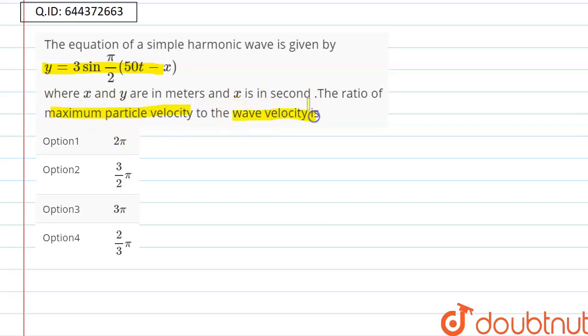Okay, so the equation is given as y = 3 sin... I am multiplying this π/2 inside, that will be (25πt - xπ/2). So this is the equation. Now we have to first find the particle velocity.